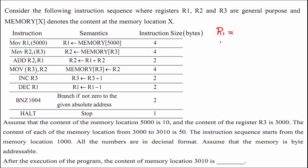r1 and r2 have not been initialized in the program, but r3 has been initialized to 3000. r1 and r2 are not initialized at all. In the very first instruction, r1 is being initialized — the value at memory location 5000 gets transferred to r1. So first, we need to find out what value is at memory location 5000.